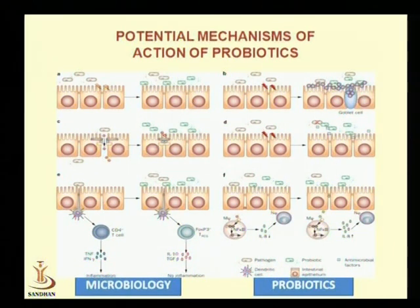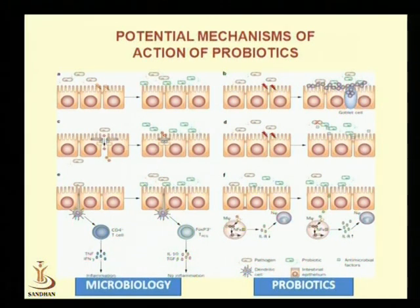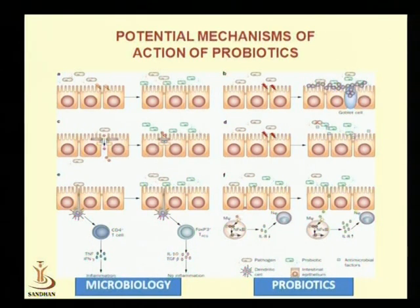In the fourth diagram, probiotic microorganisms themselves produce certain kinds of toxins in the gut, and these toxins directly target the pathogenic microorganisms. In the fifth and sixth diagrams, through immunomodulation, probiotic microorganisms enhance the immune cells present in the submucosal layer.